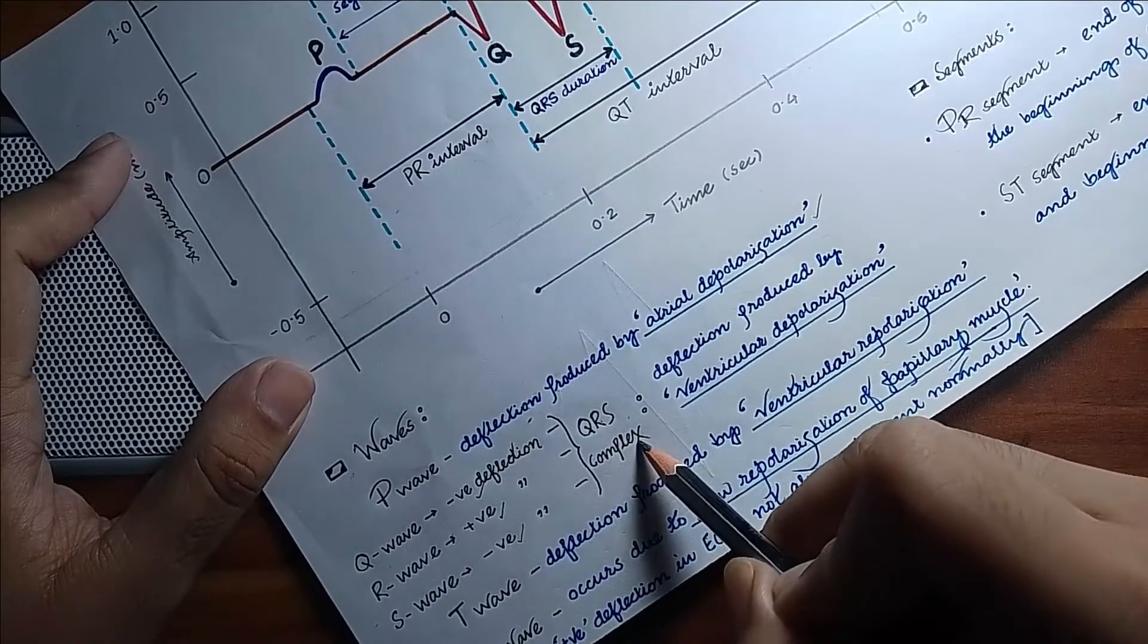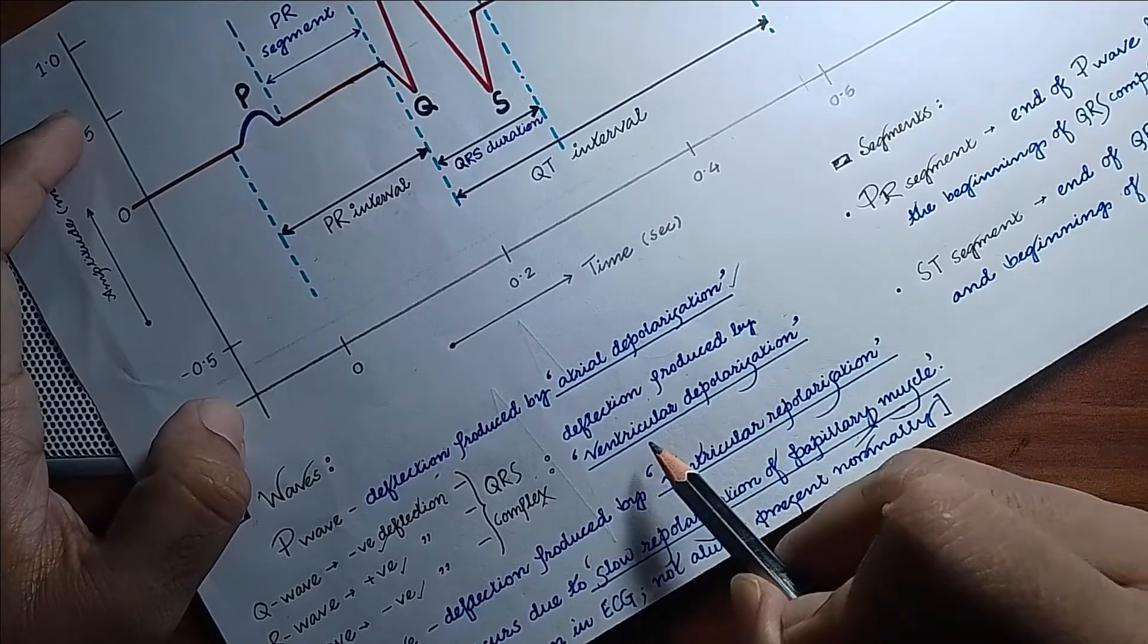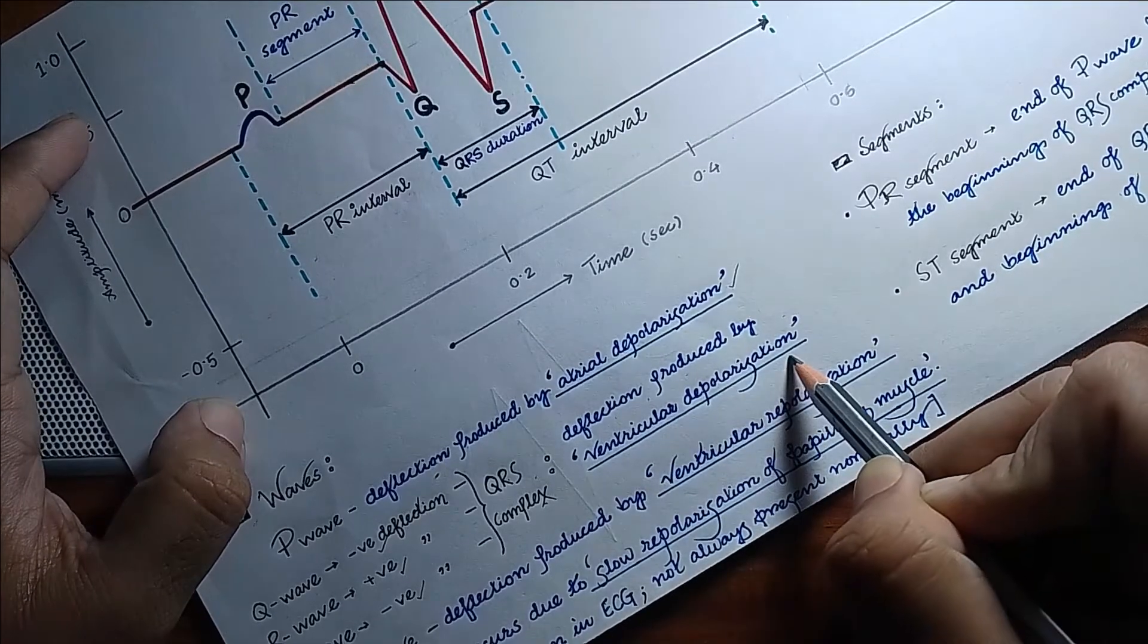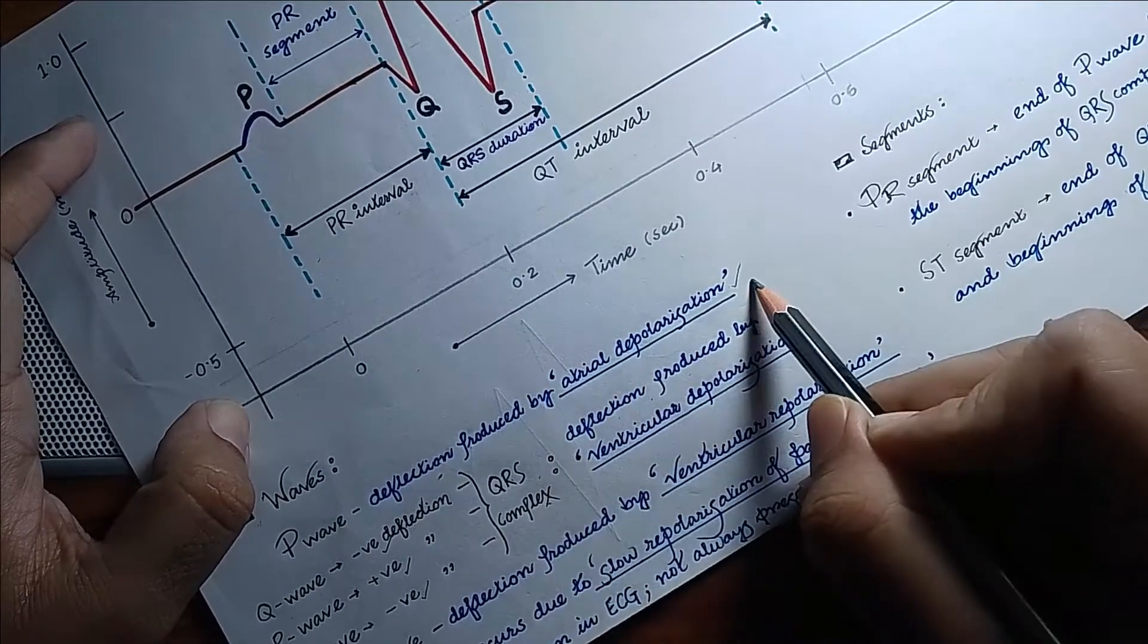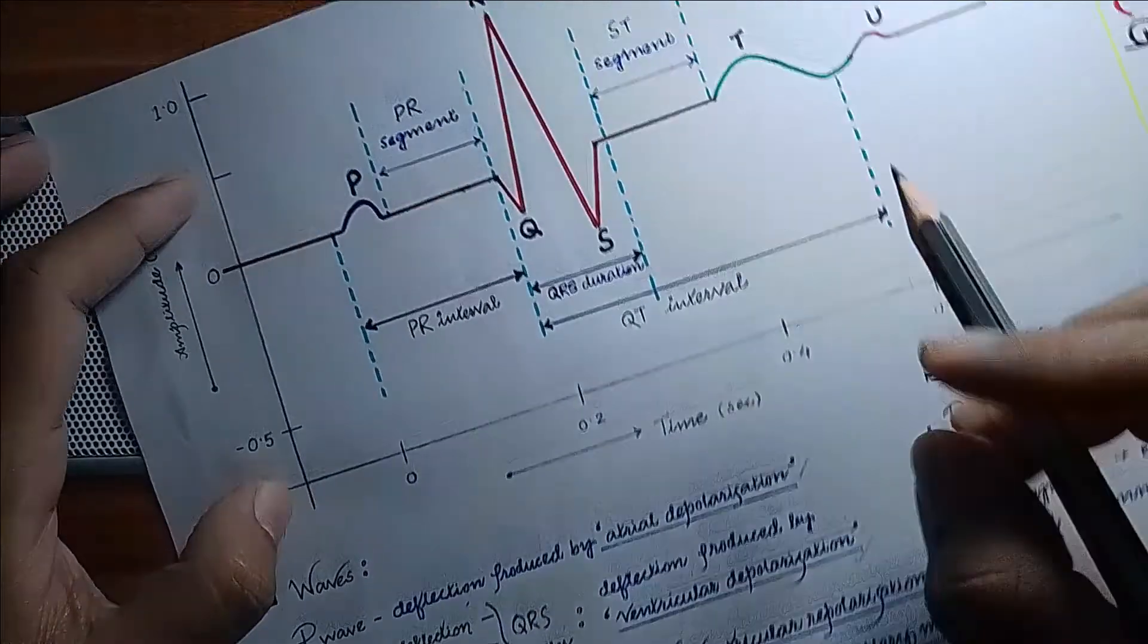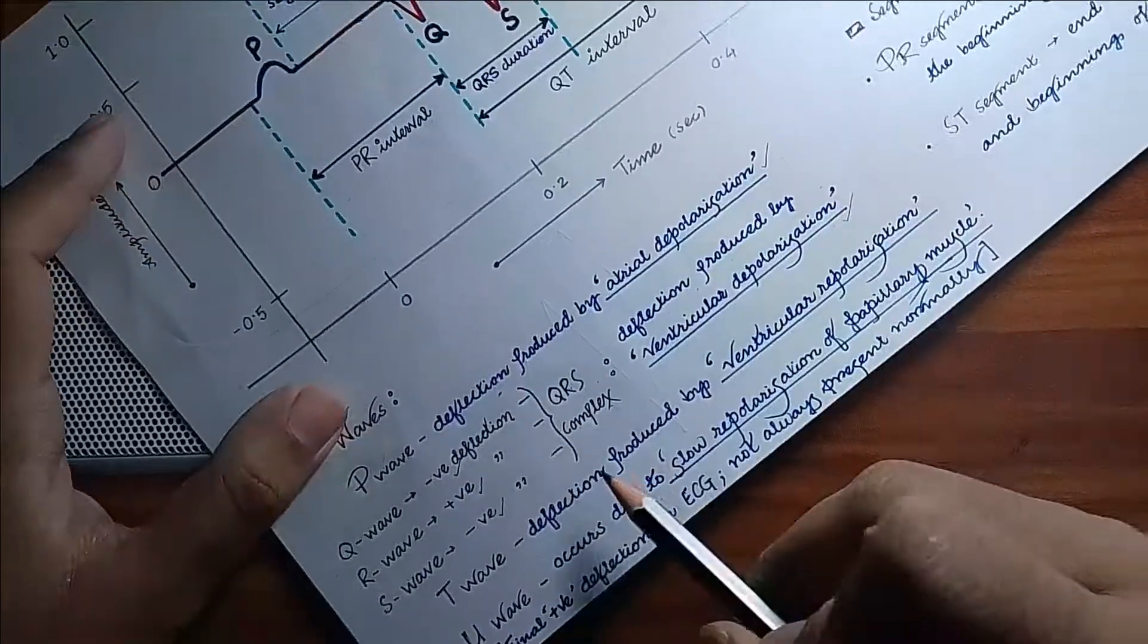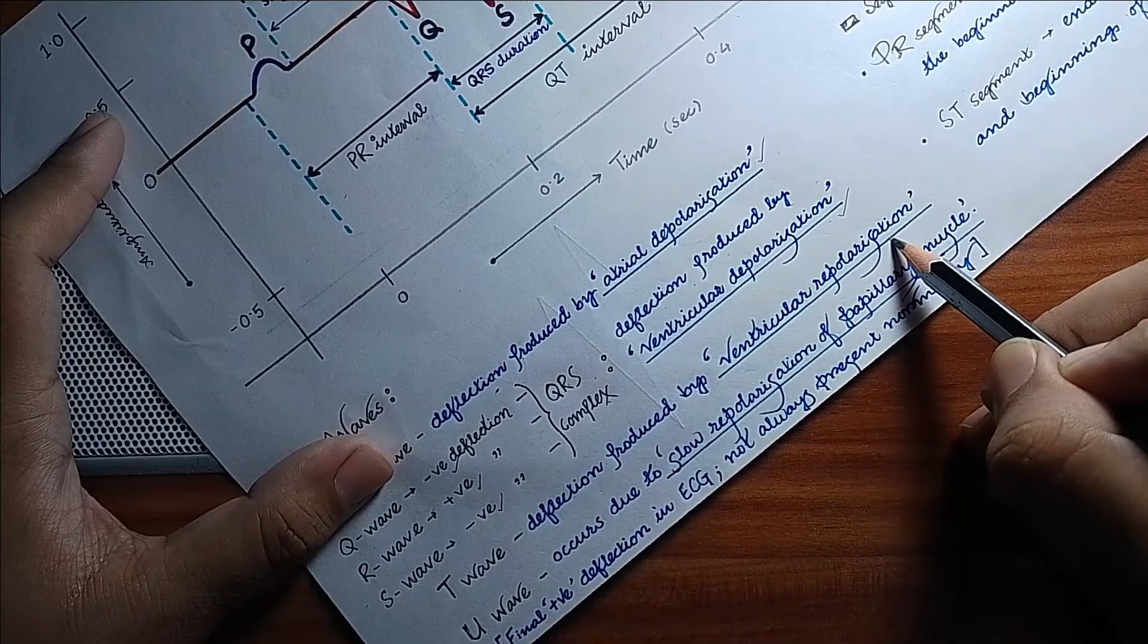It is the deflection produced by ventricular depolarization. P wave: atrial depolarization. QRS complex: ventricular depolarization. Now is the T wave. T wave is the deflection that is produced by ventricular repolarization.